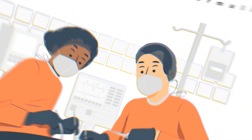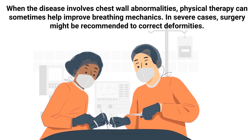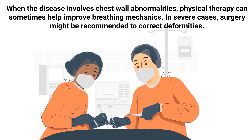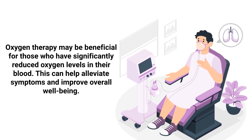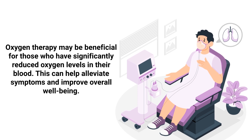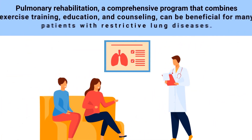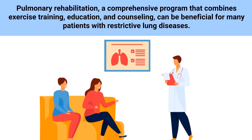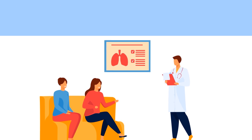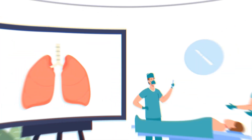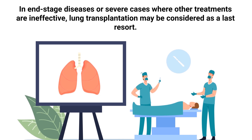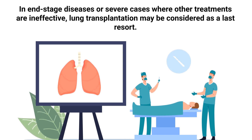When the disease involves chest wall abnormalities, physical therapy can sometimes help improve breathing mechanics, and in severe cases surgery might be recommended to correct deformities. Oxygen therapy may be beneficial for those who have significantly reduced oxygen levels in their blood. Pulmonary rehabilitation, a comprehensive program combining exercise training, education, and counseling, can be beneficial for many patients. In end-stage diseases or severe cases where other treatments are ineffective, lung transplantation may be considered as a last resort.